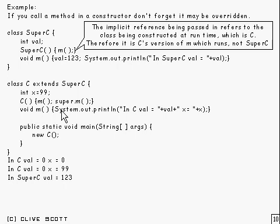This overridden M simply prints out 'In C val=' and the value of val, which is inherited, and the value of x.